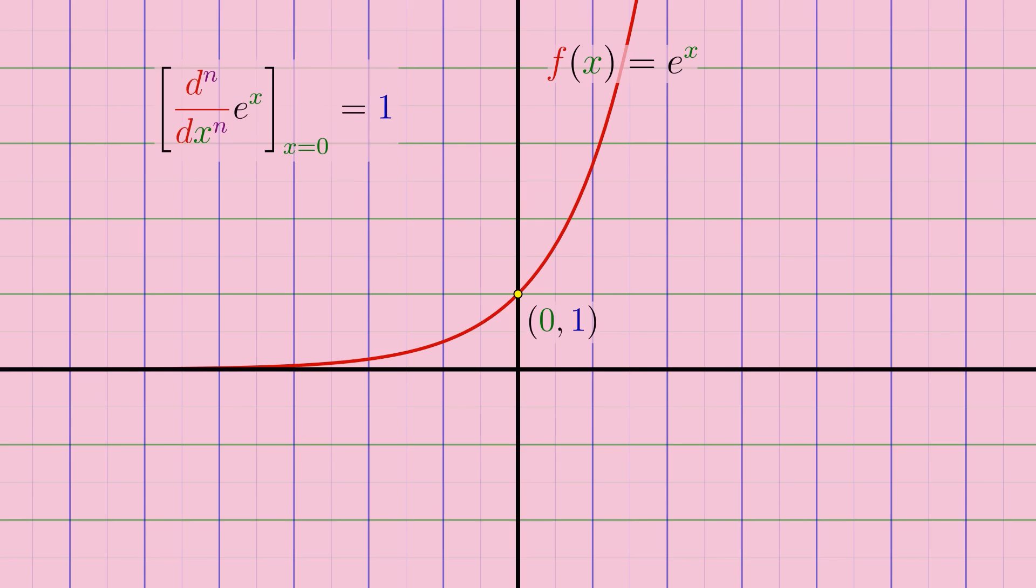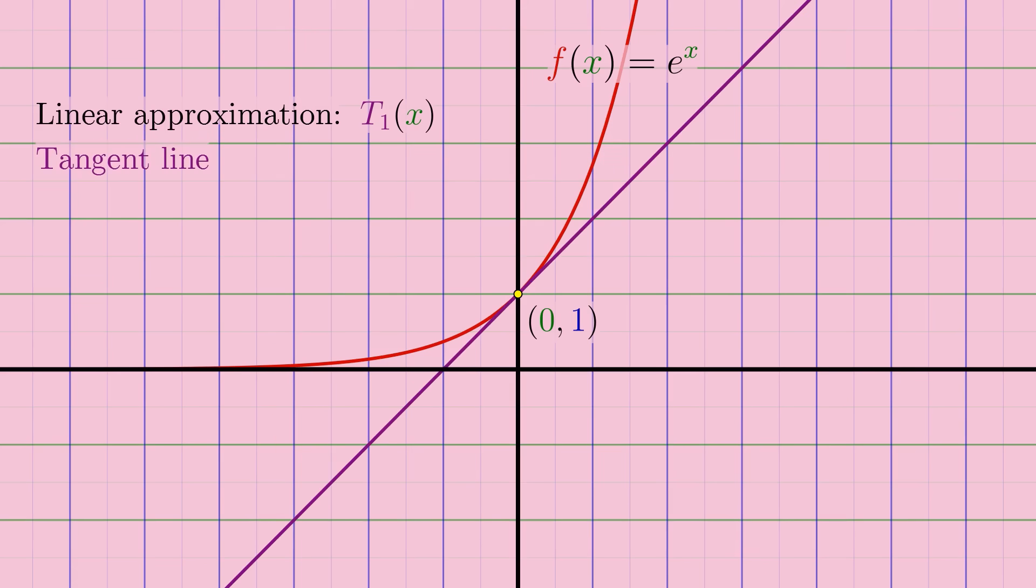Using this information about e to the x near x equals zero, we can approximate the value of e to the x near there. We can start with a linear approximation, approximating e to the x near x equals zero with a linear function. This amounts to finding the formula for the tangent line of the curve at x equals zero, since a tangent line gives the best possible linear approximation for a function around the point of tangency, since it matches two properties of the curve at that point. Its value or height above the x-axis, and its slope or derivative there.